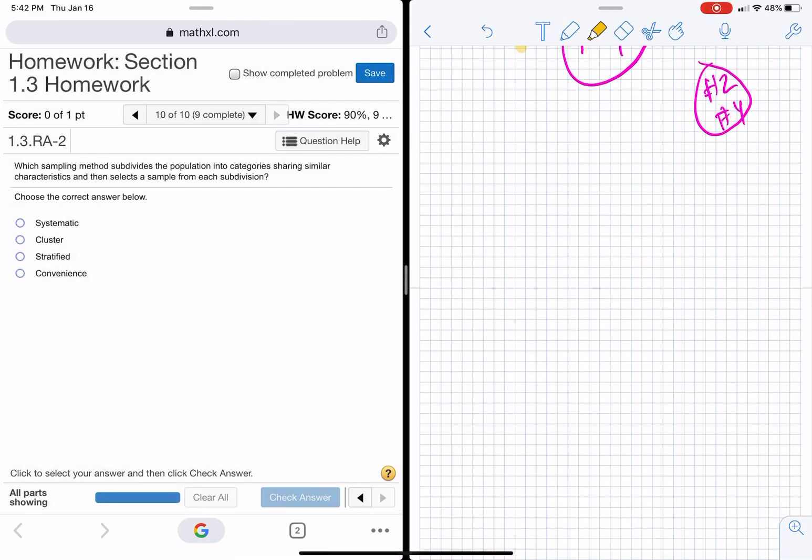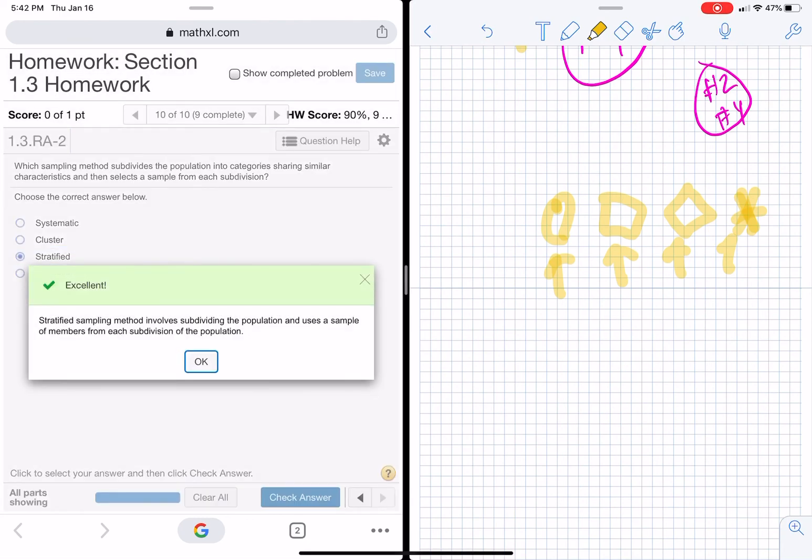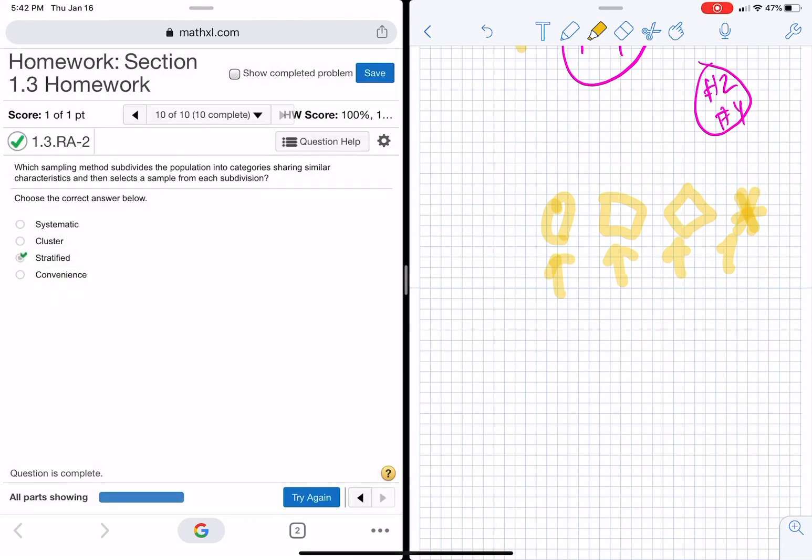Okay. Okay. This is the stratified. So this is the one where they, remember I did hearts and stuff, squares, diamonds, stars, split them up, and then take a little from each. Okay. That would be 1.3.